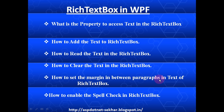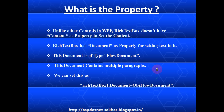Unlike other controls like Label and TextBox controls, which have properties called Content and Text to set the text, when it comes to the RichTextBox control, it has a property called Document. This Document is of type FlowDocument class, and this FlowDocument contains multiple blocks of paragraphs, and each paragraph may contain multiple lines.